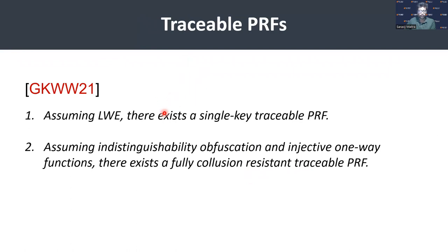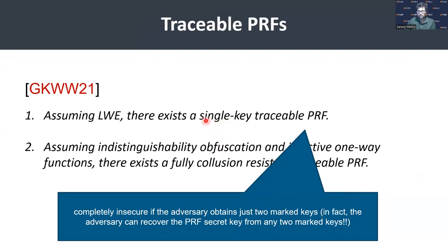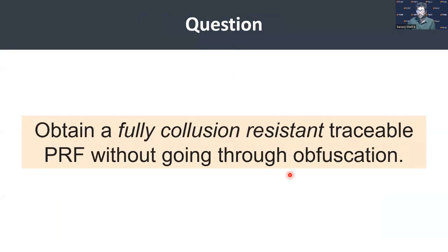Goyal et al. proved the following: assuming LWE, there exists a single-key traceable PRF; and assuming indistinguishability obfuscation and injective one-way functions, there exists a fully collusion-resistant traceable PRF. Their single-key construction from standard lattice assumptions is completely insecure if the adversary obtains even just two marked keys — the adversary can recover the PRF secret key from any two. Thus the natural question motivating this work is: can we obtain a fully collusion-resistant traceable PRF without going through obfuscation? Such a construction would be plausibly post-quantum secure.